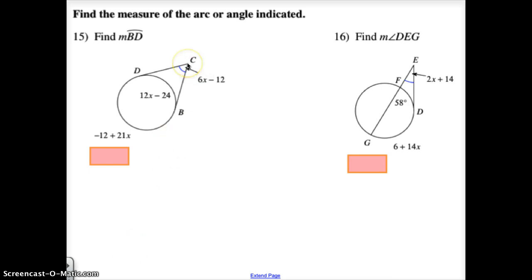Because point C is outside the circle, we have to subtract the two arcs, negative 12 plus 21x and 12x minus 24, subtract the two, divide them by two, and then set that equal to 6x minus 12. When you do that you should find that x equals 12 and then once you do that you plug 12 in and you get 120 for that.